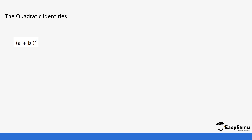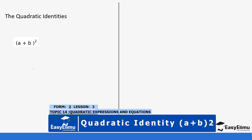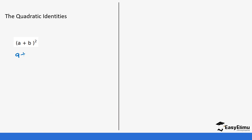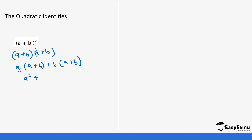So initially when expanding expressions, let's take (a + b) squared. The normal expansion is (a + b)(a + b). Using one bracket to open the other: a times (a + b) plus b times (a + b), giving us a squared plus ab plus ab plus b squared. Putting like terms together: a squared plus 2ab plus b squared.